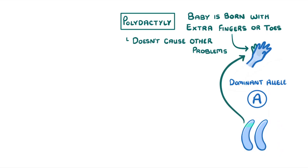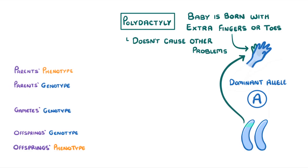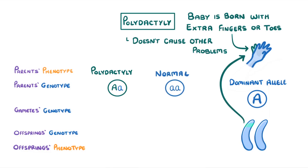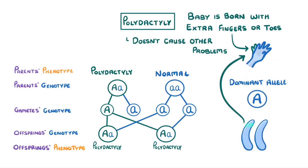So even if only one of your two alleles was the polydactyly one, you'd still have the disorder. We can see how this might work with a genetic diagram if we were to cross a heterozygous individual who has polydactyly with a homozygous normal individual. The gametes would be one dominant polydactyly allele and three normal alleles.